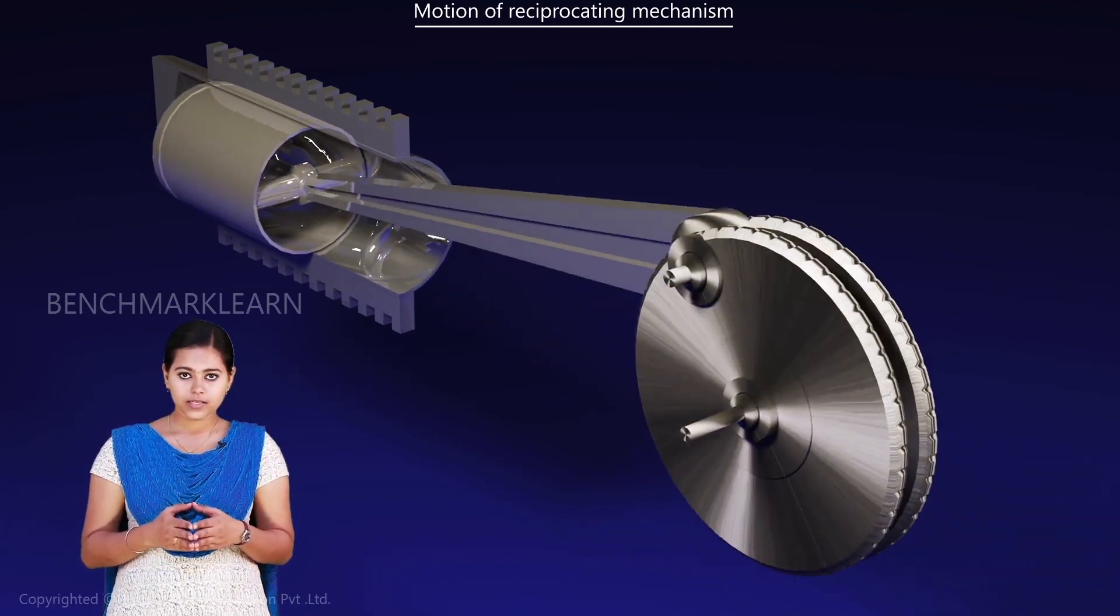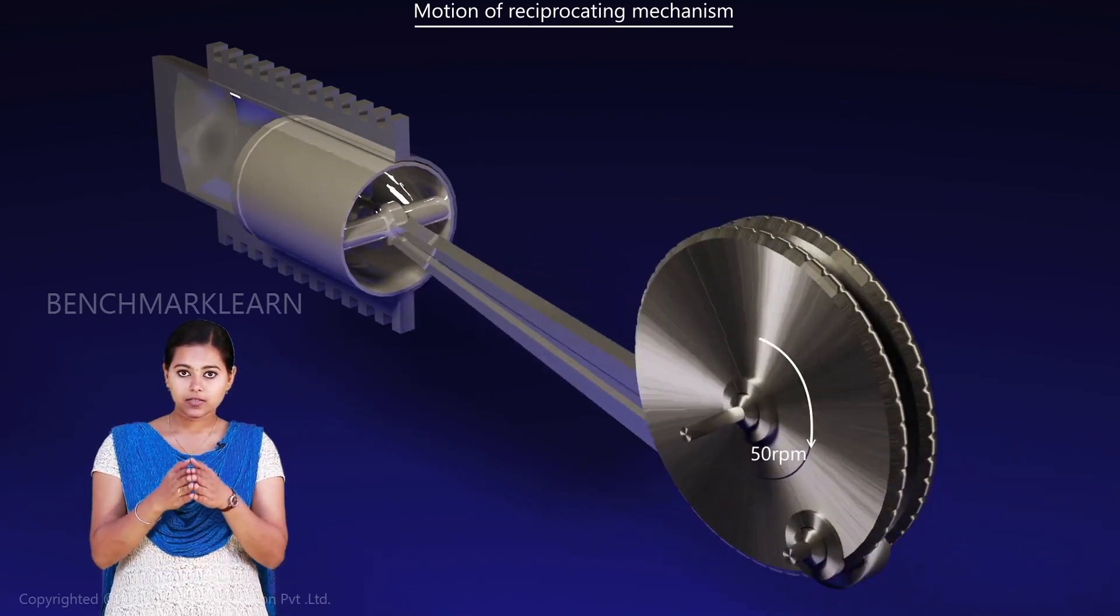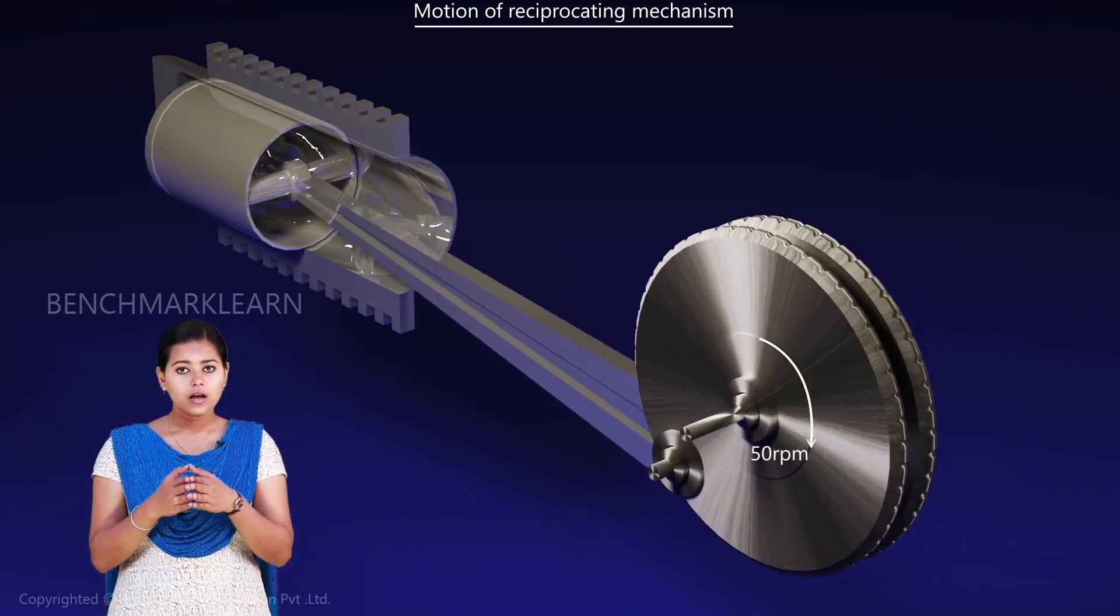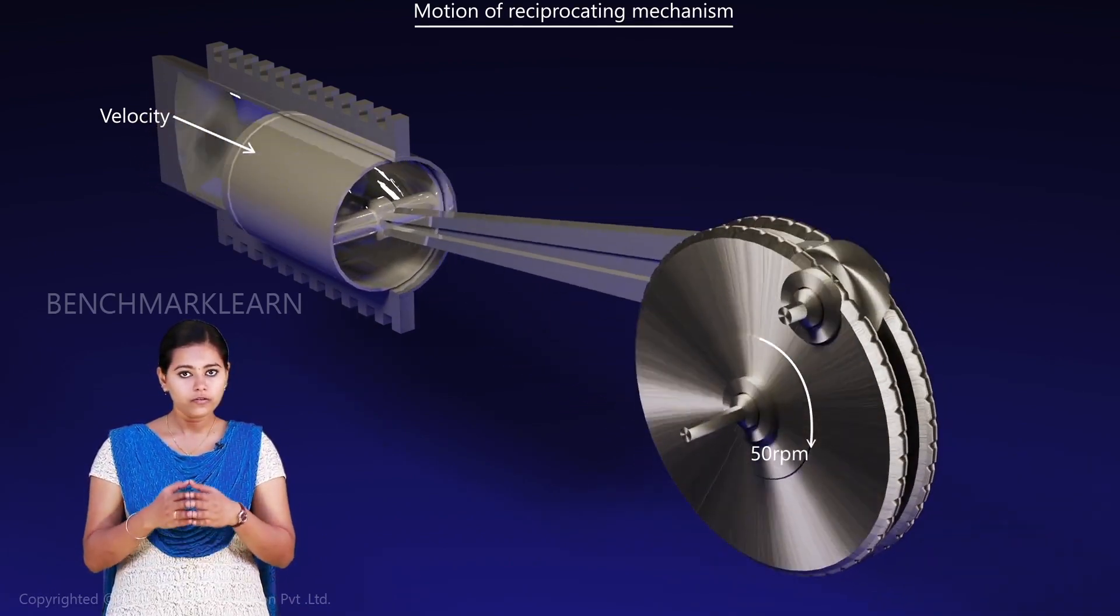So consider a case. If we know the speed of rotation of the crank as 50 rotations per minute, how can we find the velocity of the piston to rotate the crank at 50 rpm?